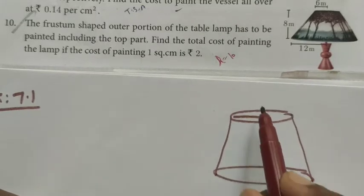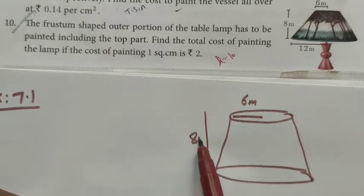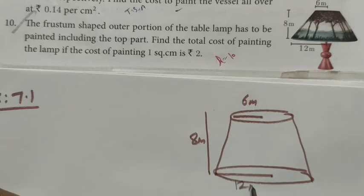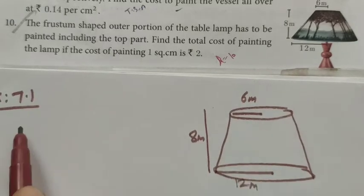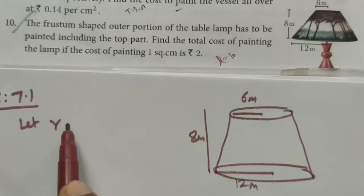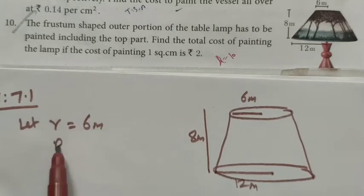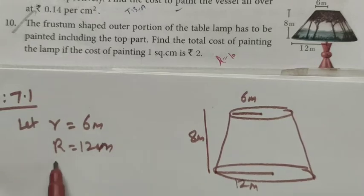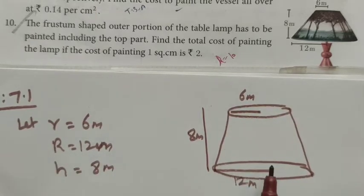The top radius is given as 6 cm. The total height of the lamp is given as 8 cm. The bottom radius is given as 12 cm. So small r = 6 cm, capital R = 12 cm, and height h = 8 cm. The lamp is in the frustum form.